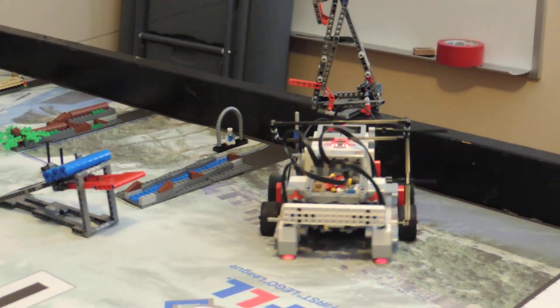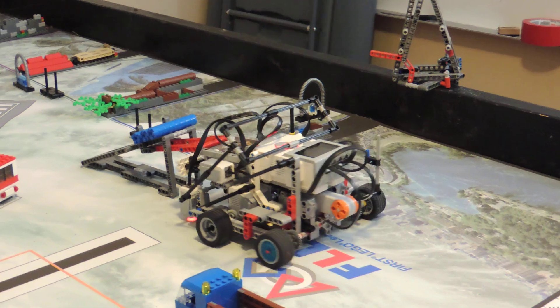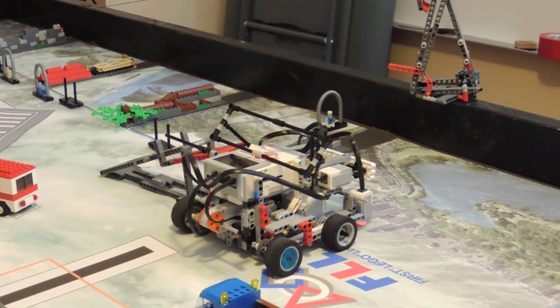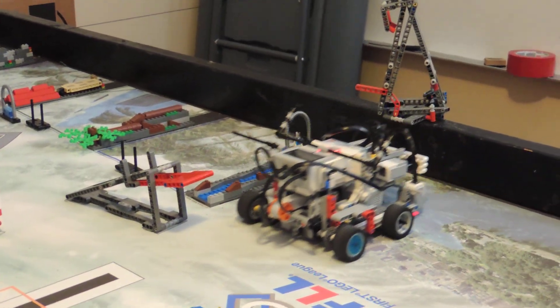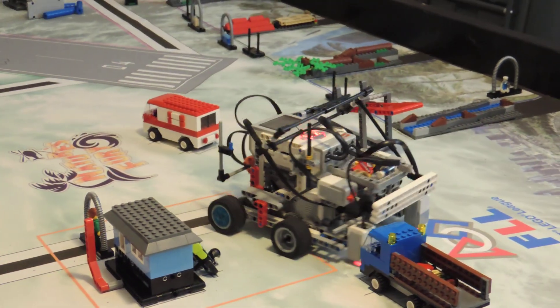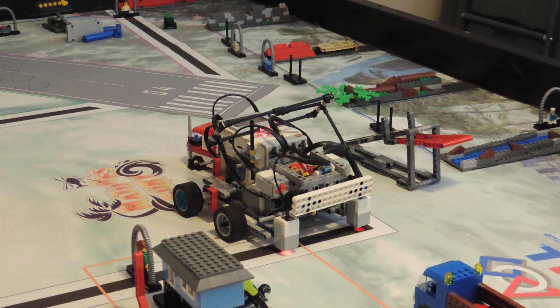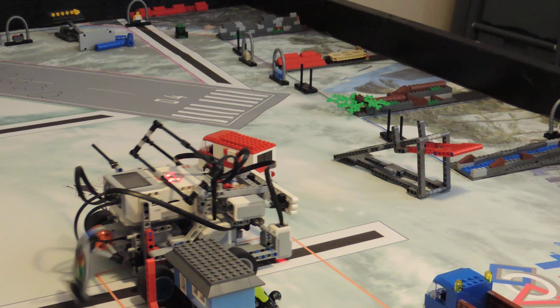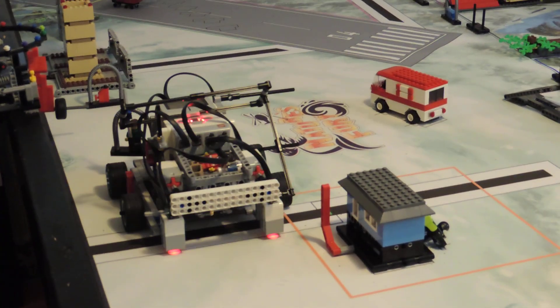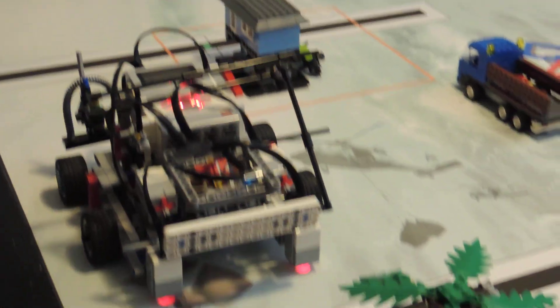Rhino is going for the airplane. Rhino gets the airplane and the tsunami. Rhino lines up against the floor and against the black line. Rhino gets George and the house.